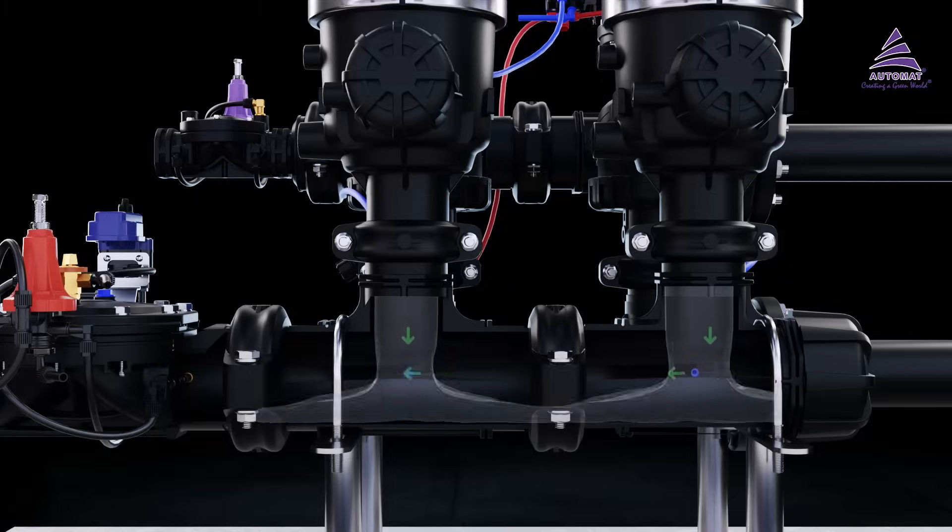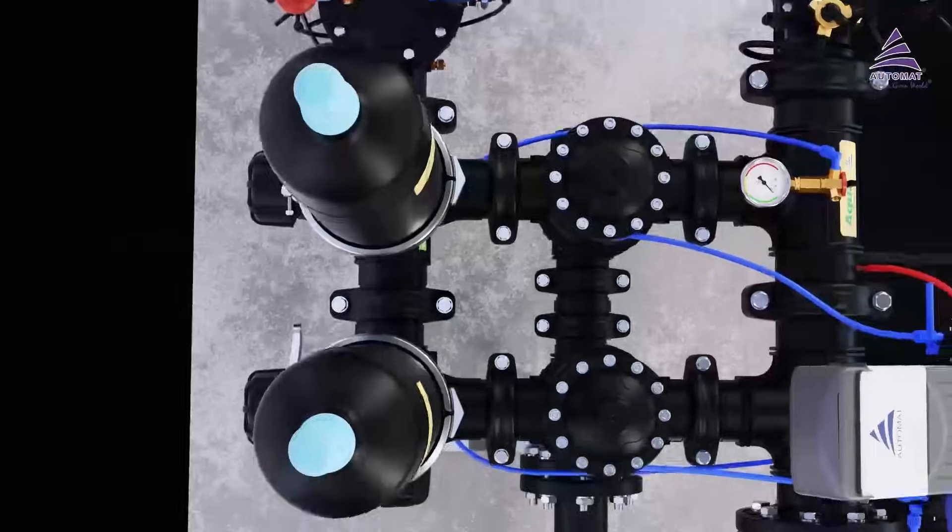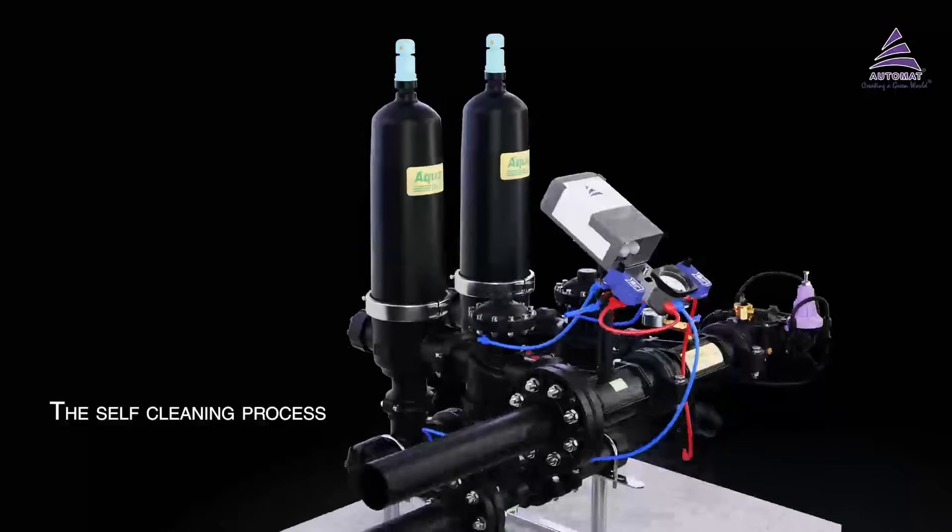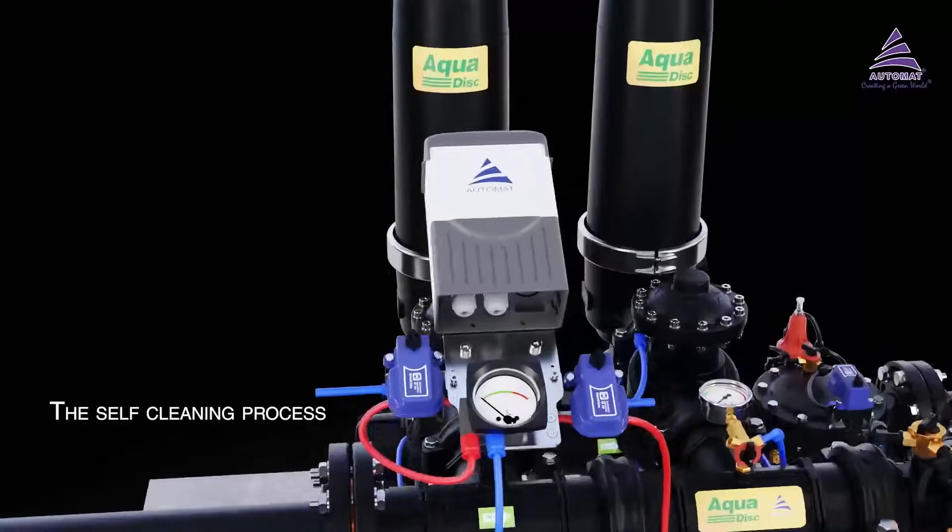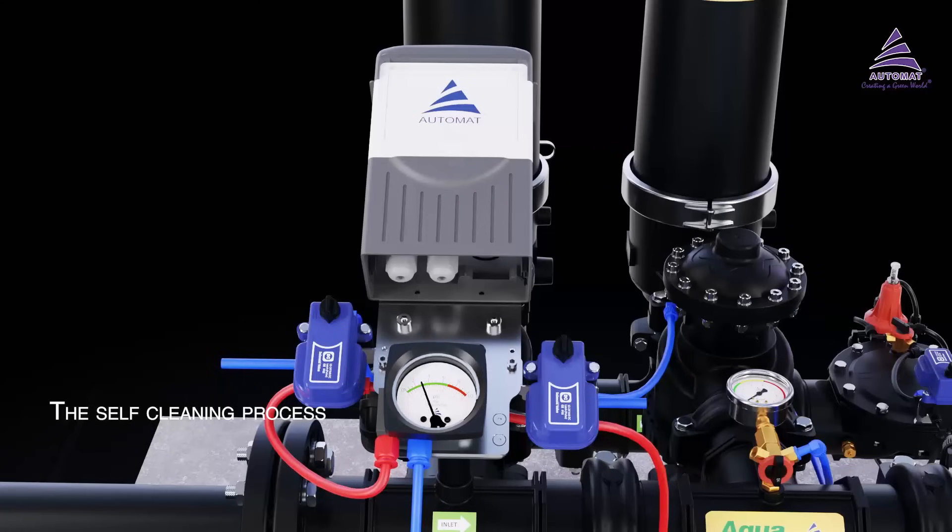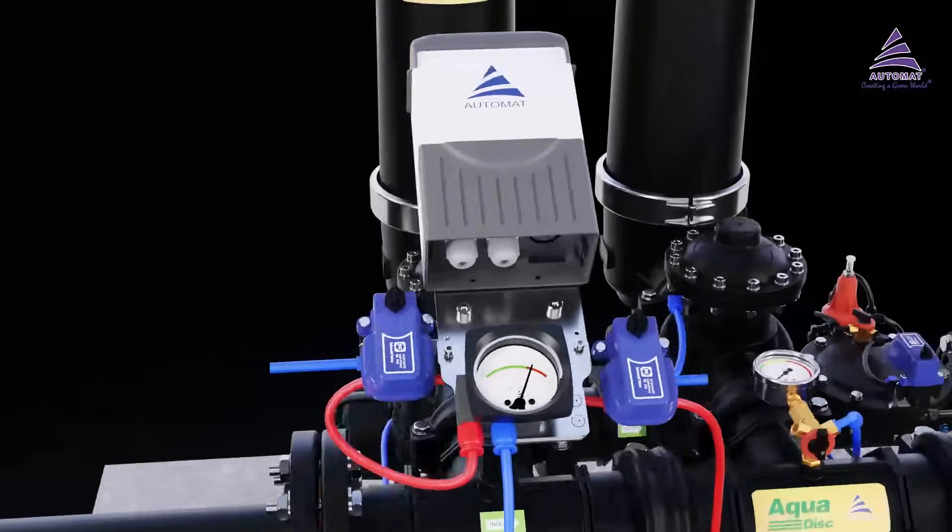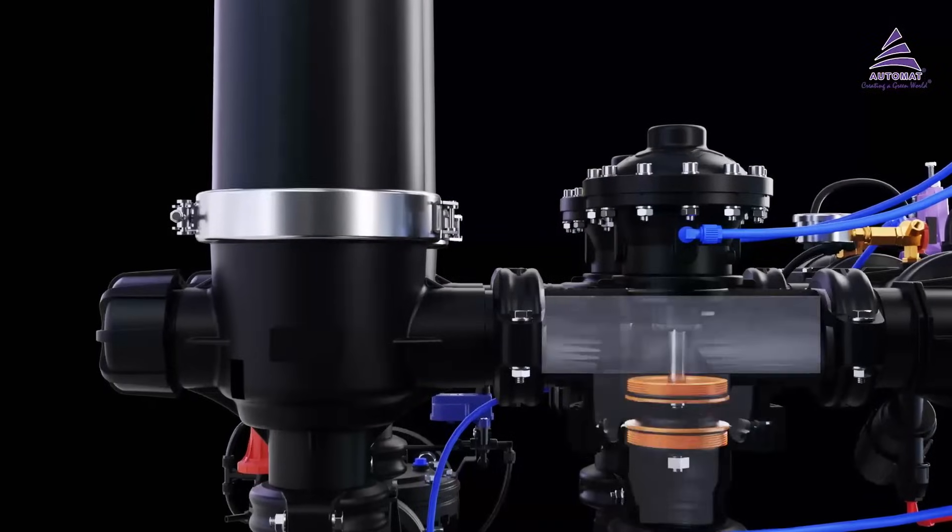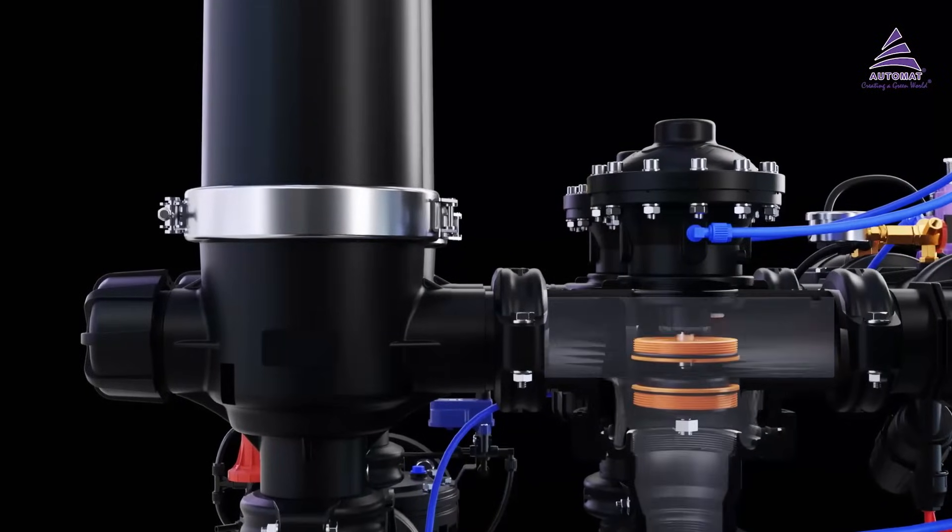During filtration mode, the check valve will remain open and clean water will pass through the outlet port. The self-cleaning or backflush process is activated either by a preset pressure differential, predefined time period, or manual command.